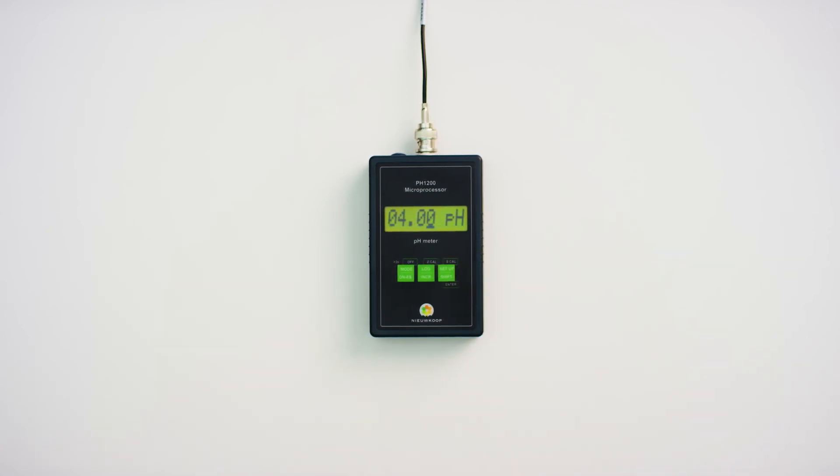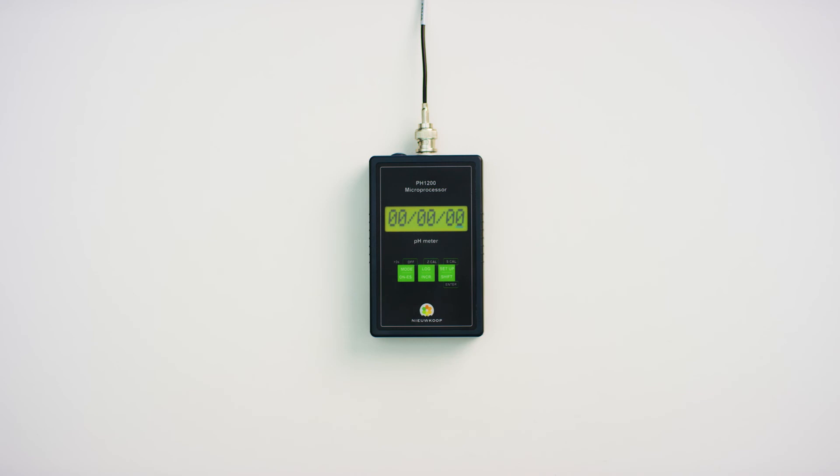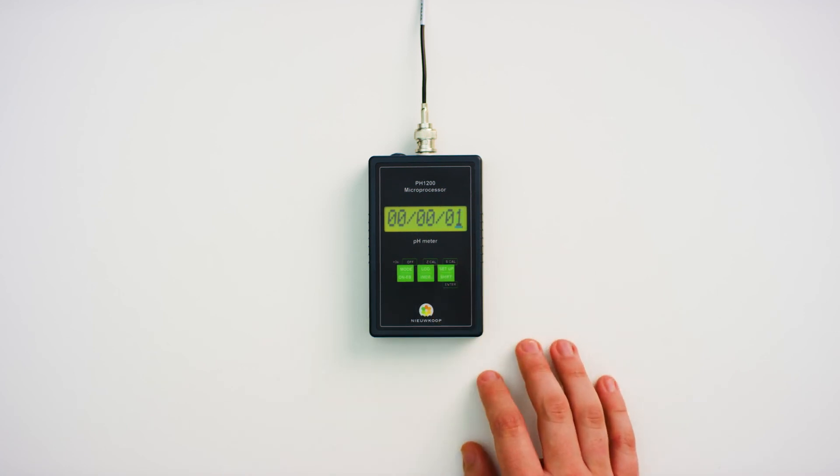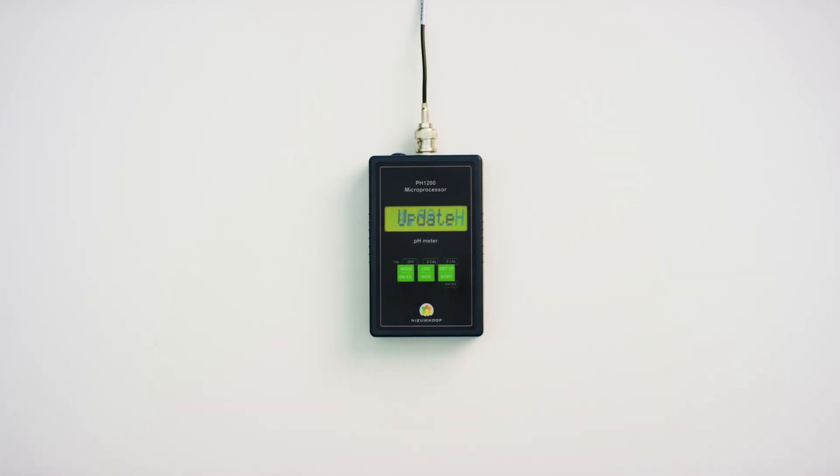4.00 appears in the display and you then press and hold the setup button. Last cal appears followed by a date. Here you enter the date in the same way as in the previous step. With the INCR key you change the number and with the setup key you select the position. After setting press and hold the setup button and update will appear on the display.